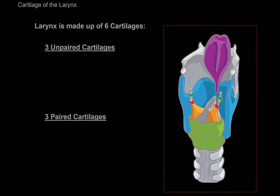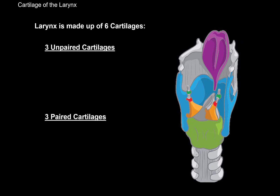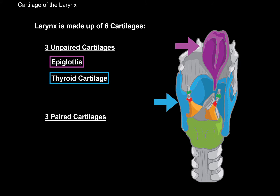Now let's start by understanding how the larynx is built. The larynx is made up of 6 types of cartilage in total — 3 paired and 3 unpaired cartilages. Cartilages that are unpaired means you only have one of each. These are the epiglottis, in purple; thyroid cartilage, in blue; and the cricoid cartilage, here in light green.